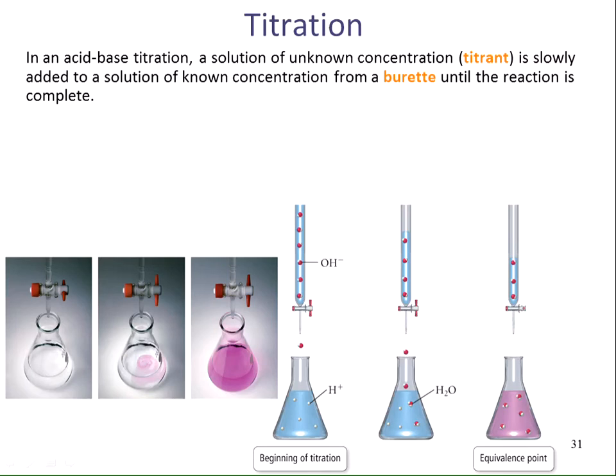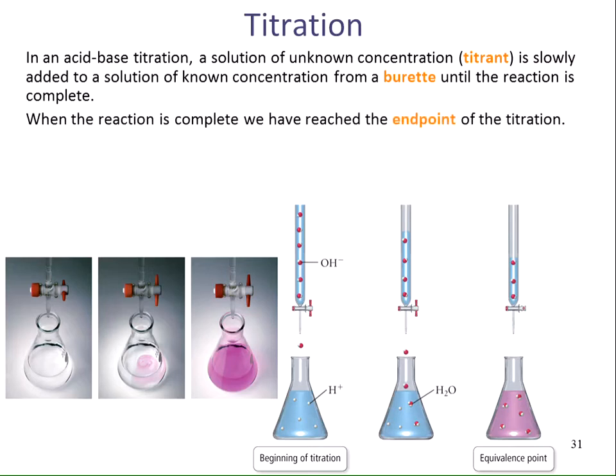This is part of the lecture series for chapter 16, and in this video we will be looking at the titration of a strong acid with a strong base. In an acid-base titration, a solution of unknown concentration, which is termed the titrant, is slowly added to a solution of known concentration from a burette until the reaction is complete. When the reaction is complete, we have reached the end point of the titration, so the end point is when we stop the titration.